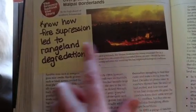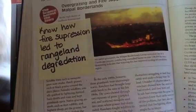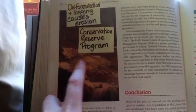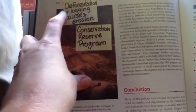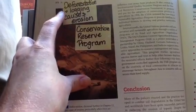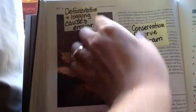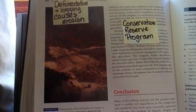The last thing for chapter nine is to understand logging and how deforestation — cutting down trees — causes erosion. You also need to know about the conservation reserve program and what this agency and program is. That's the end of notes for chapter nine.